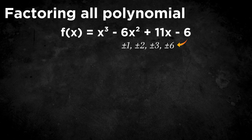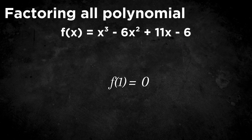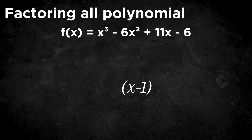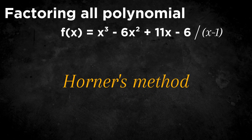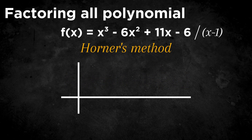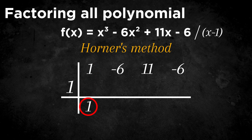This is called the rational root theorem. Now we just need to test them until we find one. Let's test the number 1. f(1) equals 0, so we found a root already. Now that we know that 1 is a root, we also know that x minus 1 is a factor of the function. We can divide the original function by our new factor using Horner's method. Make a table like this and place 1, our root, here. Then place the coefficients of every term next to one another, and bring down the first number. Then multiply the first number by 1 and place the result above the line under minus 6, then add the two numbers together and repeat the process.